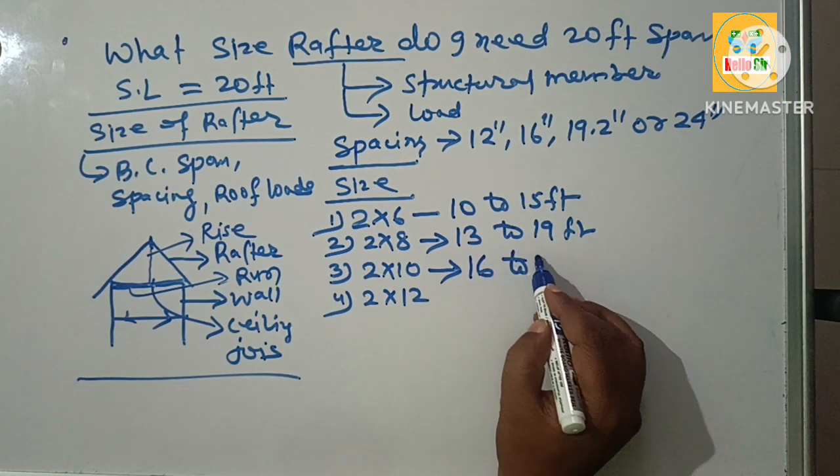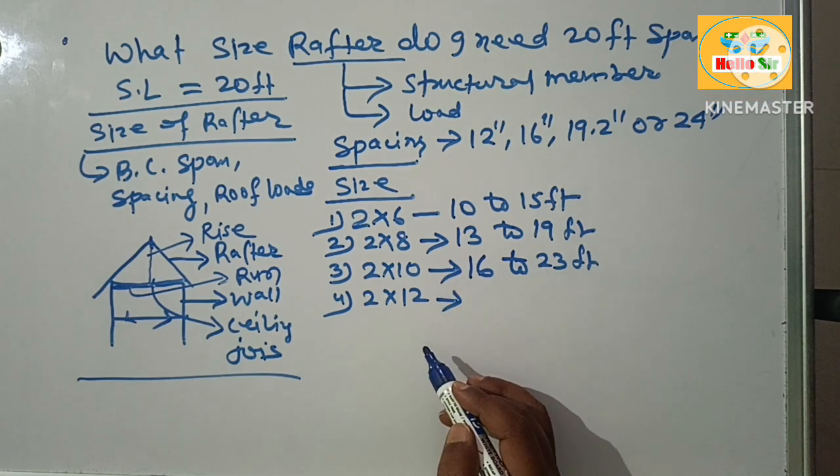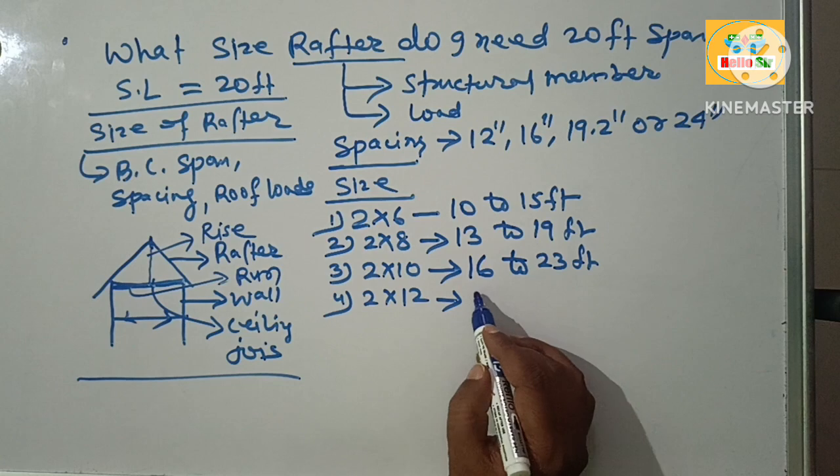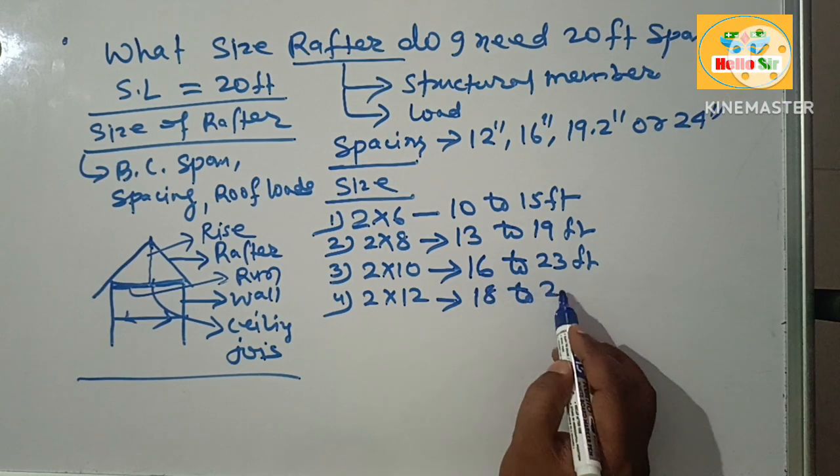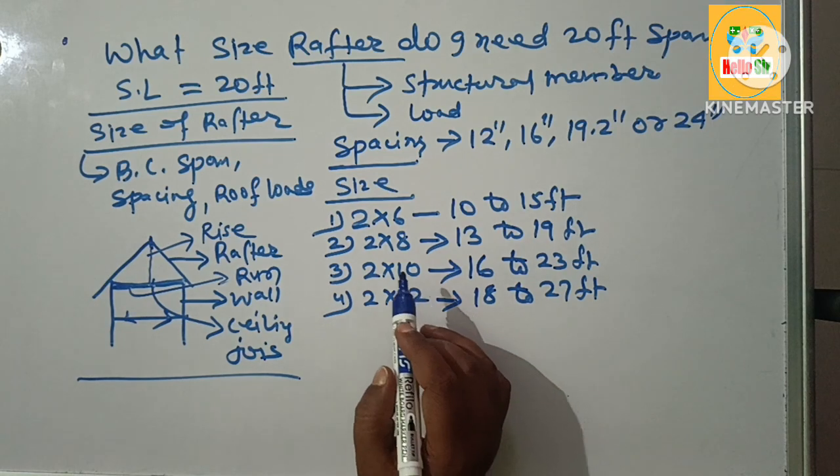A 2 by 12 rafter may span from 18 feet to 27 feet as general guideline.